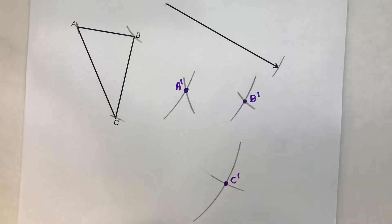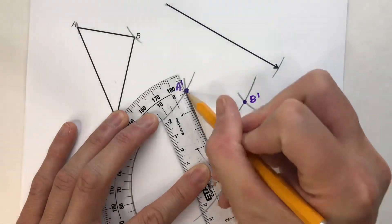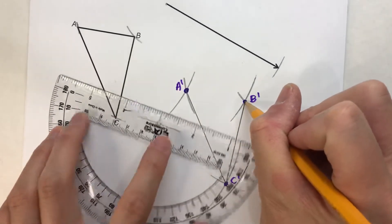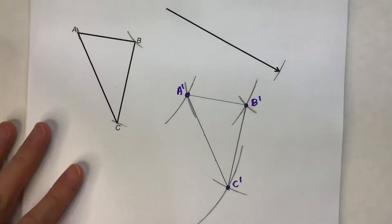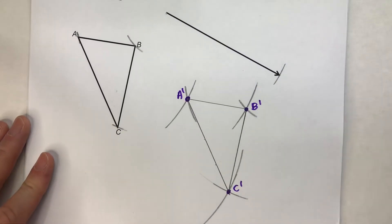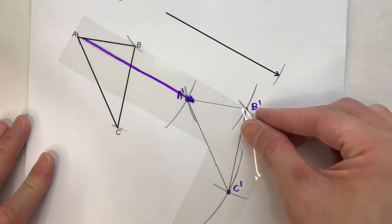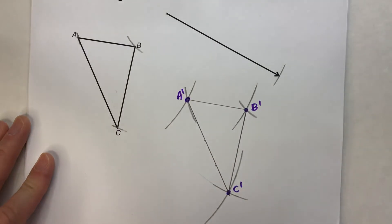There we go. And when I connect up all those points, I should have my triangle slid over. And there it is. So basically, all I did was take each point and just slid them over based on that vector.